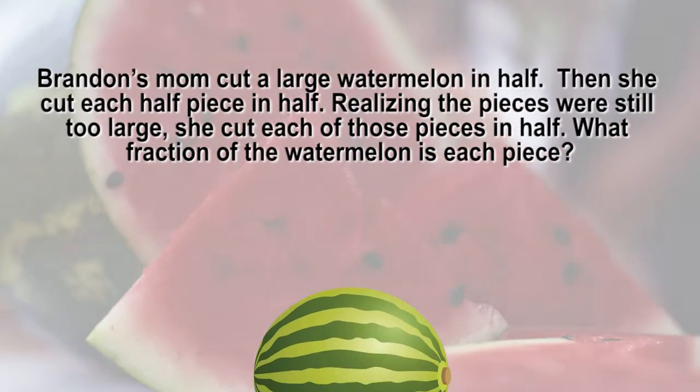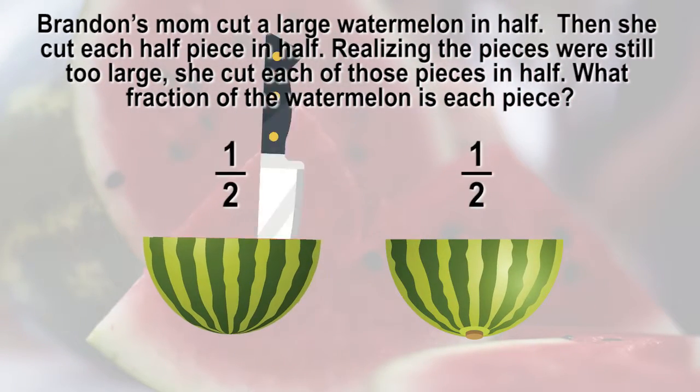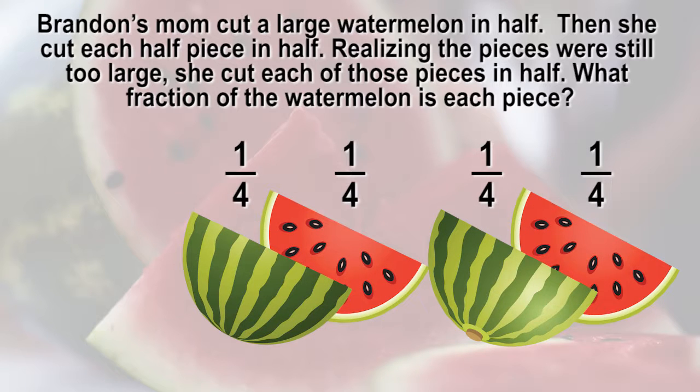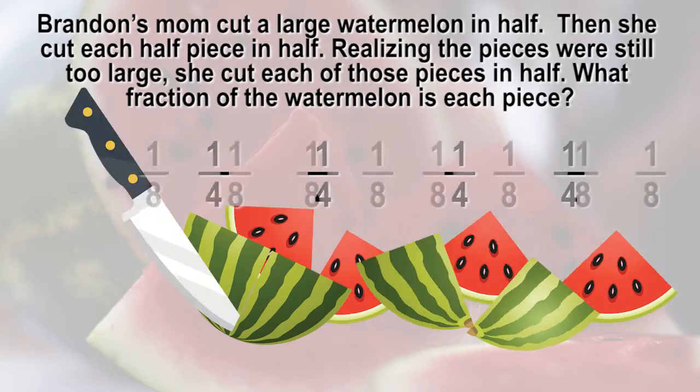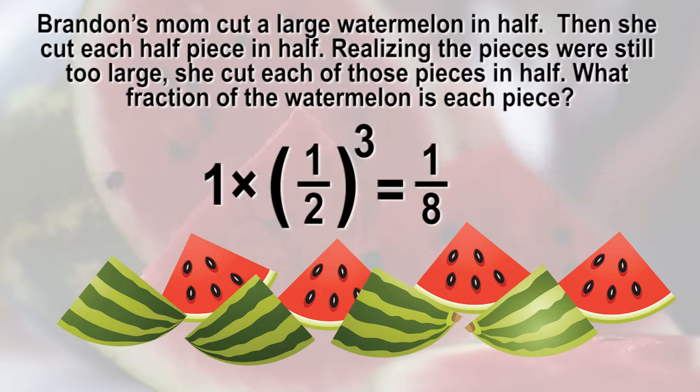We start with one whole watermelon and divide it in half. Cutting each of those pieces is represented by one half of one half. The third cut represents one half of one half of one half. One half of one half is one fourth. One half of one fourth is one eighth. Each piece is one eighth of the whole. We can write the expression exponentially as one times one half raised to the power of three.